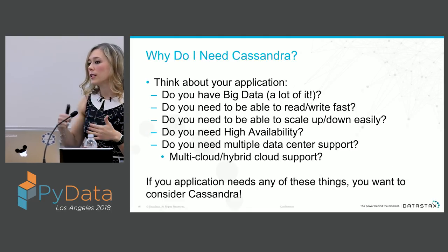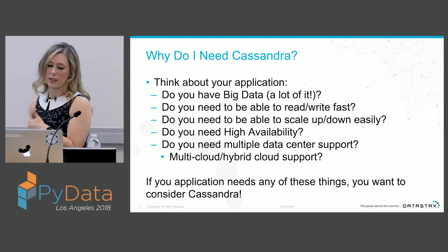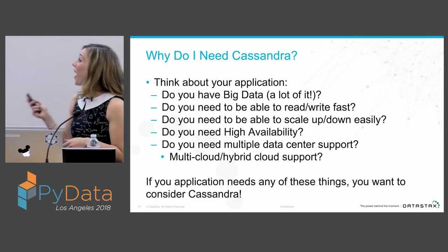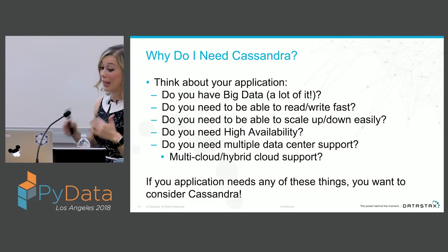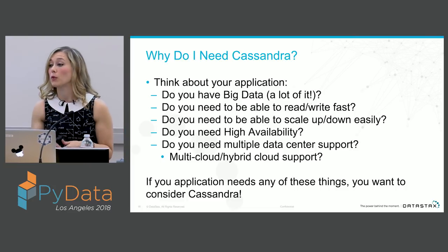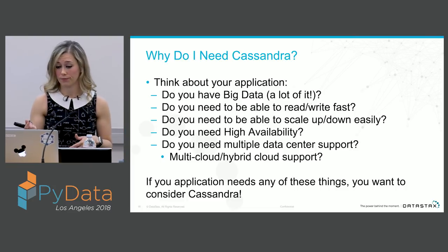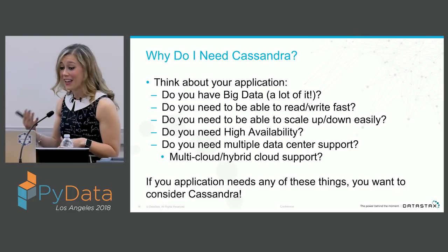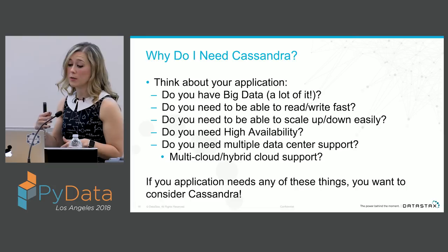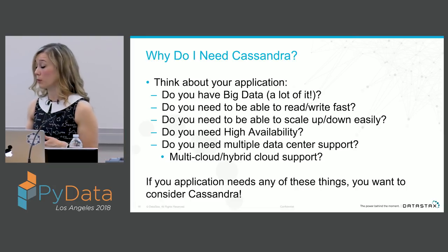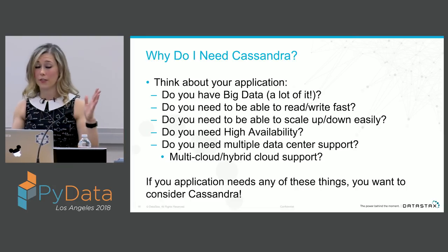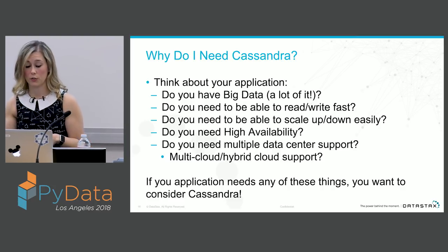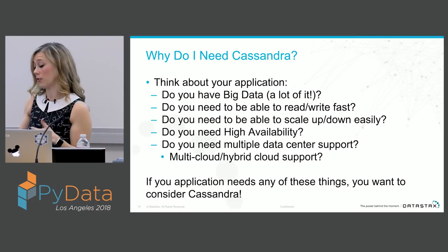So why might you need this — why would this be something your application needs? Do you have big data, a lot of it? Do you need to read and write very fast? Do you need to scale up and scale down very easily? Do you need high availability? Do you need multi-data center support, multi-cloud, or hybrid cloud? If you need that kind of support, then you might want to consider using a database like Cassandra.